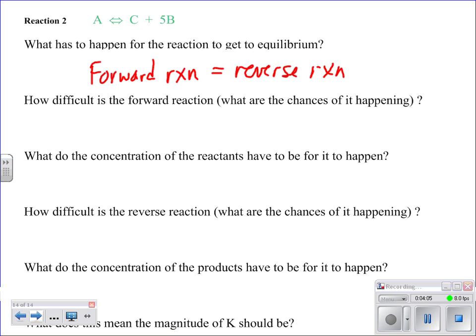How difficult is it for this forward reaction? So here we have A breaking down to six particles. That doesn't sound very difficult at all. Let's say that's pretty easy for someone to break down. Concentrations, well, those reactants can be pretty low, and it will still happen.